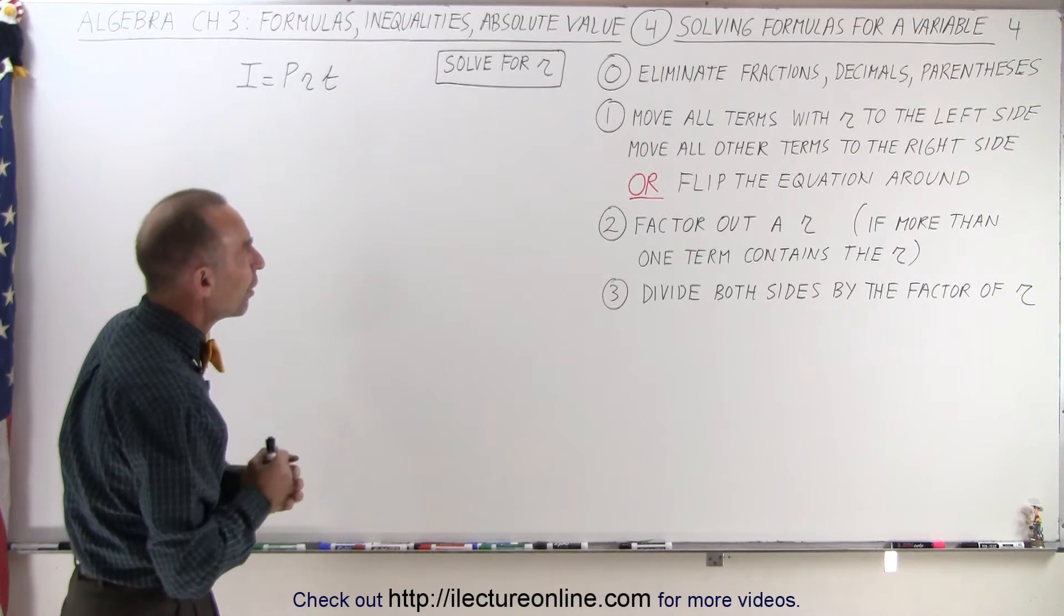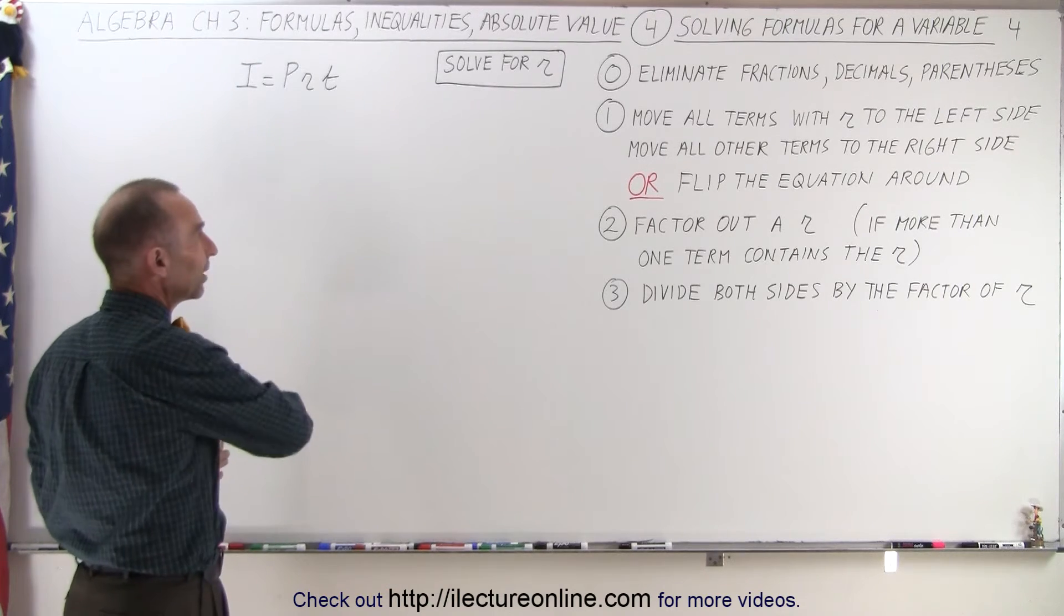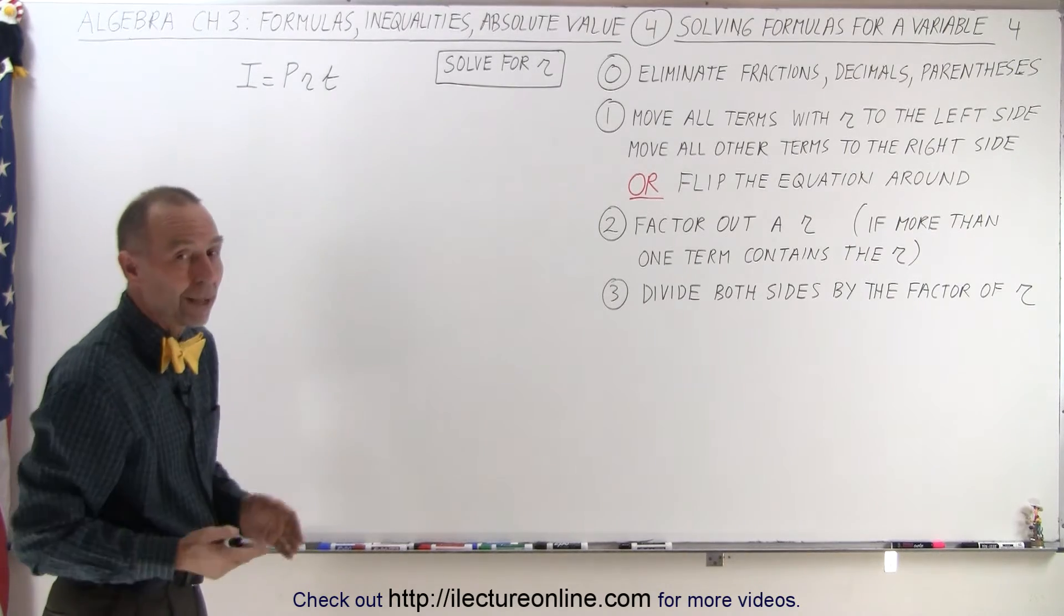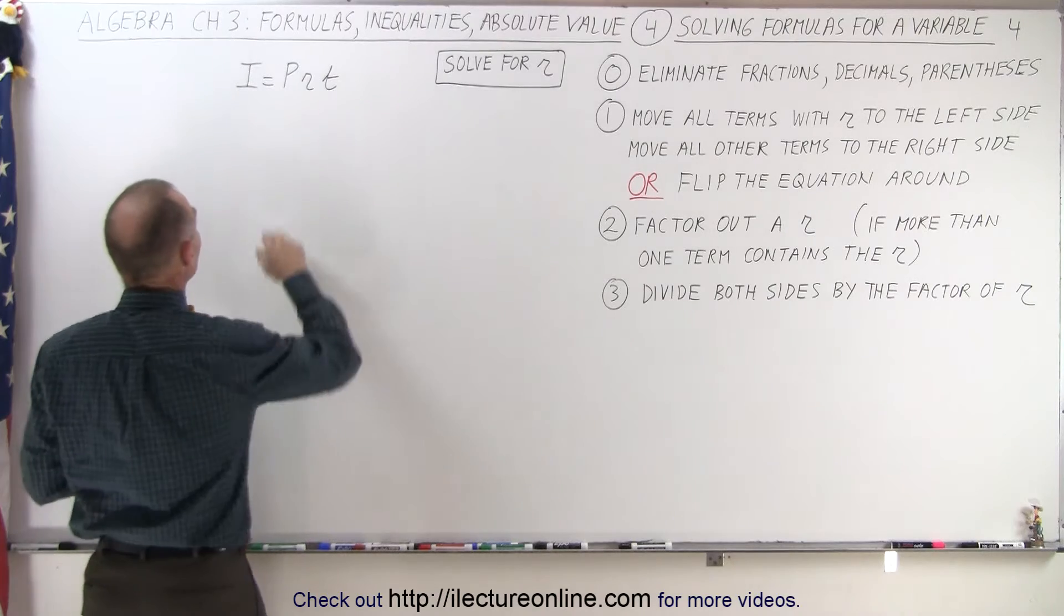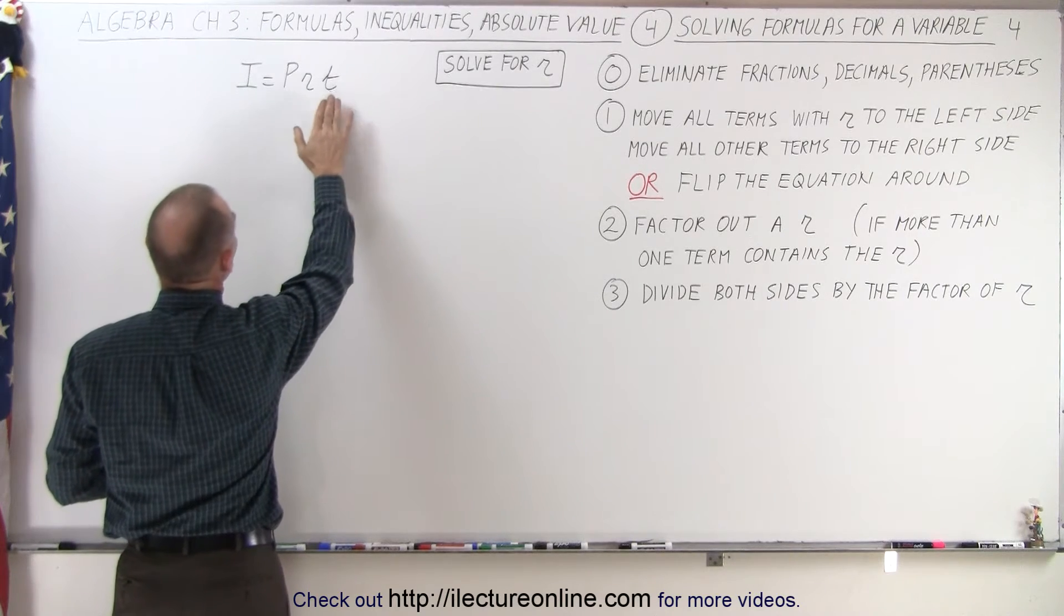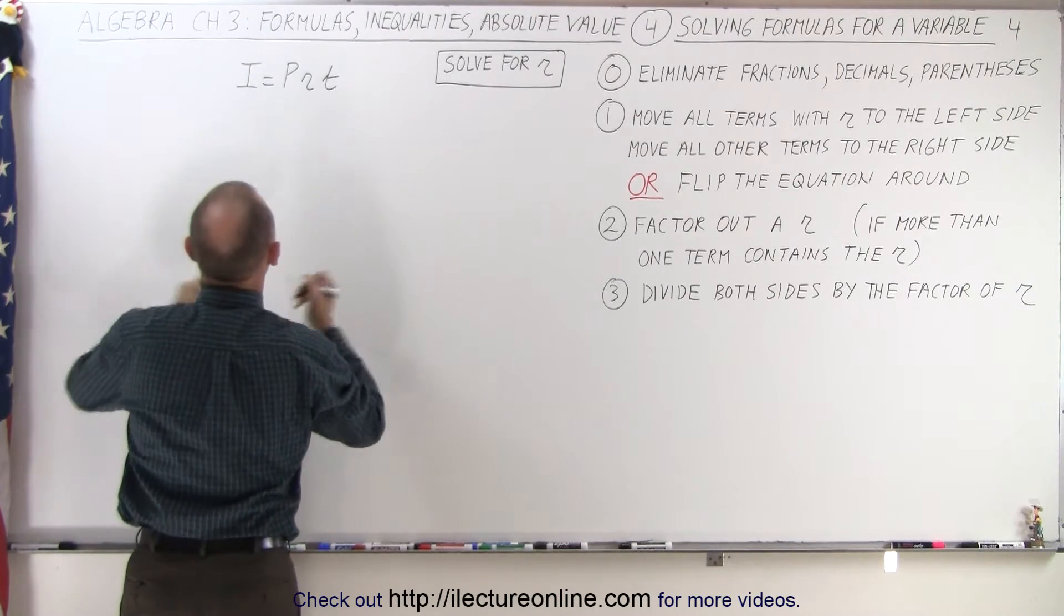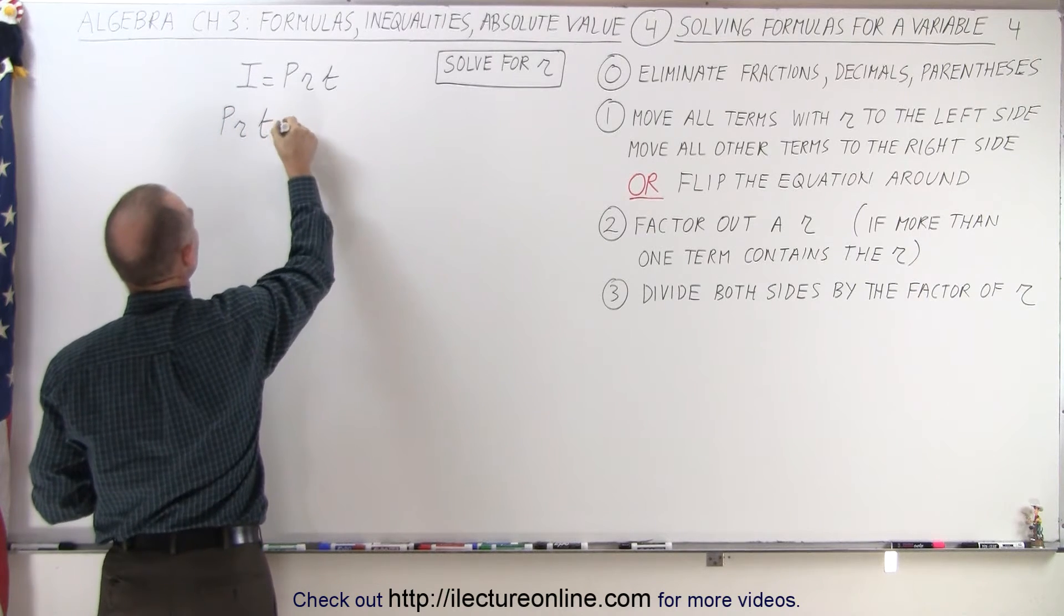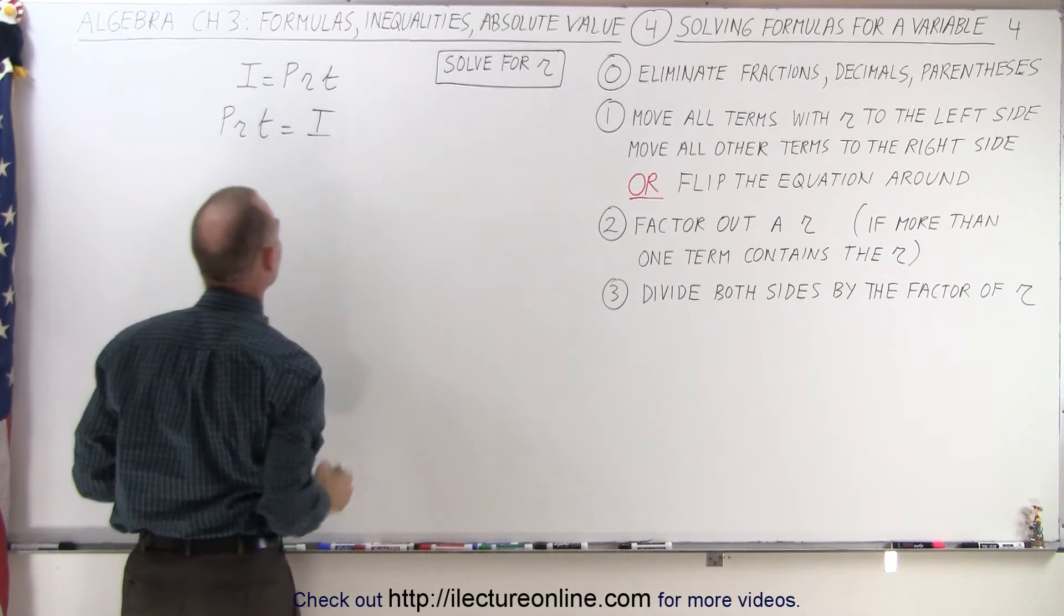Step number one, move all the terms with R to one side, everything else to the other side. Or, in this case, we can simply flip the equation around, keep all the signs positive. If the left side equals the right side, then the right side equals the left side. So we can write PRT is equal to I, interest earned.